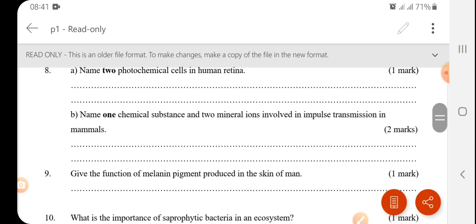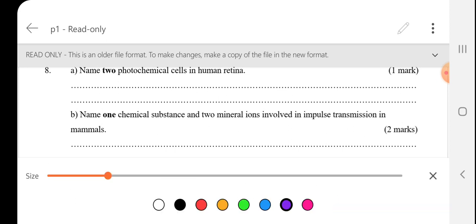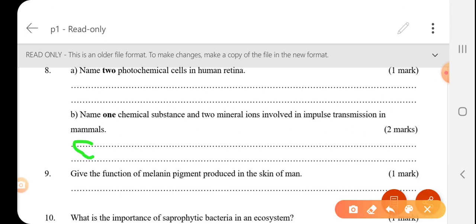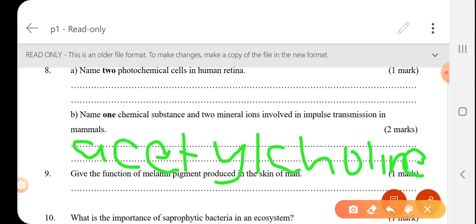Name one chemical substance and two mineral ions involved in impulse transmission. So the chemical substance is called, I have to write it down, the term is a little bit tricky. So it's called Acetylcholine, A-C-E-T-Y-L-C-H-O-L-I-N-E.